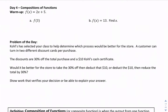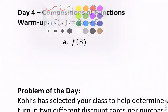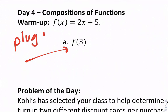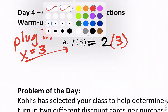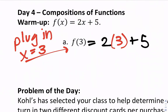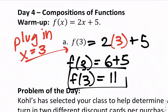We're going to spend two days looking at composition of functions. First, a quick review for the warm-up: if f(x) = 2x + 5, can you find f(3)? This means plug in a 3 for x. So f(3) = 2(3) + 5 = 6 + 5, so f(3) equals 11.